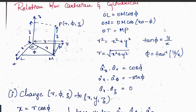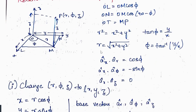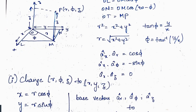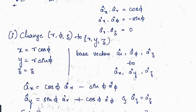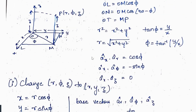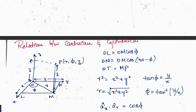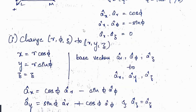The dot products of unit vectors give: âx·âr = cosφ, âx·âφ = −sinφ, âx·âz = 0. To convert cylindrical to Cartesian: x = r·cosφ, y = r·sinφ, z = z.